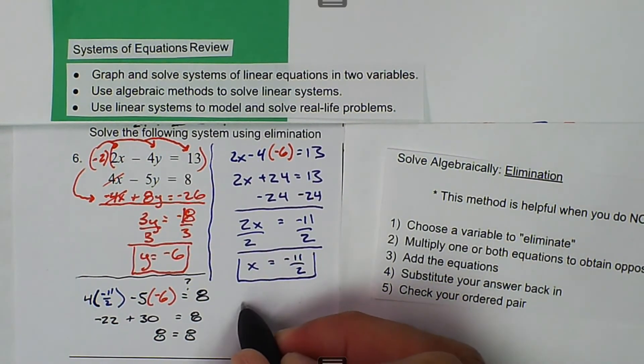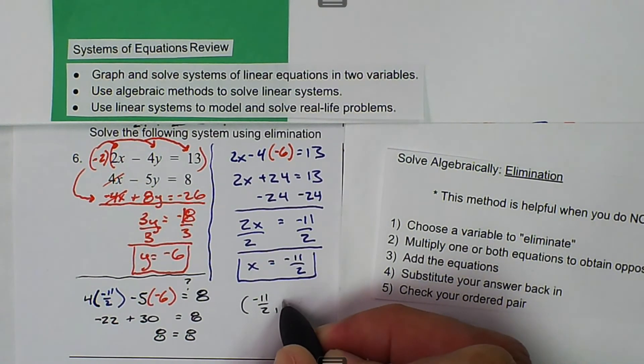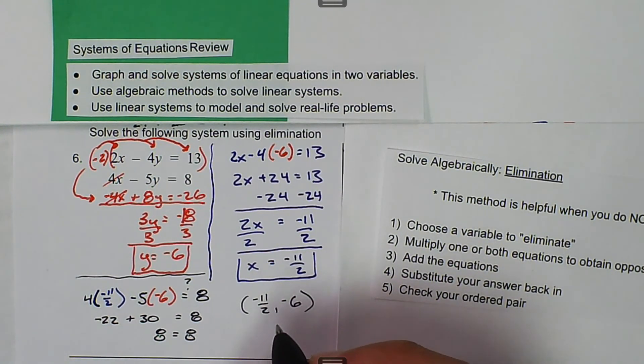So our solution for this case is negative 11 over 2 and negative 6. And then this is consistent independent.